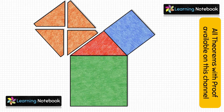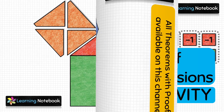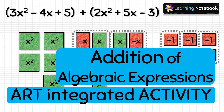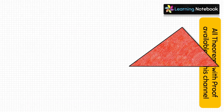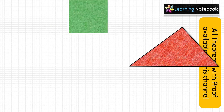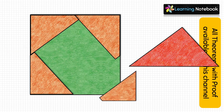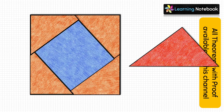After cutting the orange square along the lines, you should get four quadrilaterals. Now place the green square first, then the orange quadrilaterals, and then in the middle place the blue square. What do you observe? We see that the four quadrilaterals along with the blue square completely cover the green square.